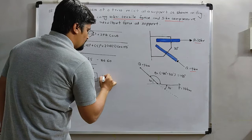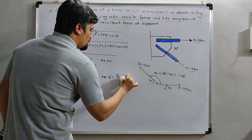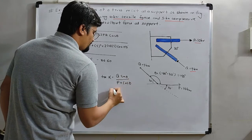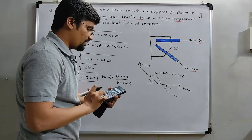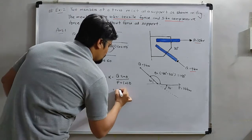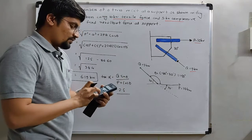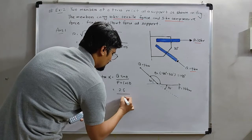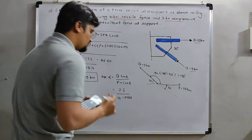Tan alpha is equal to Q sin theta upon P plus Q cos theta. Sin theta means sin 150 into Q means 5, it means 2.5, divided by P plus Q cos theta means cos 150. It is minus 0.866. So 10 minus 0.866.